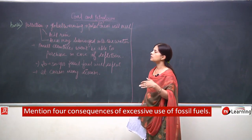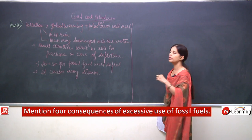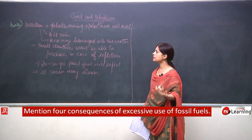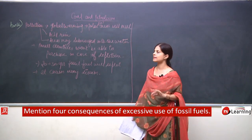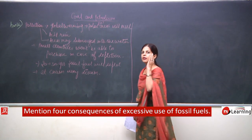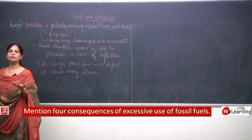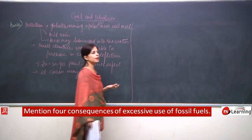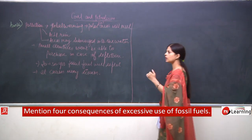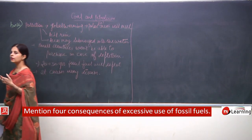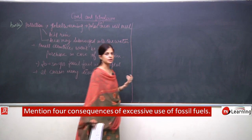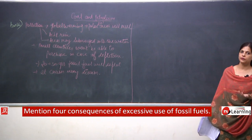Pollution will increase global warming, due to which the ice on the polar areas will melt and sea levels will increase, causing areas to get submerged. Pollution also causes acid rain. Smaller countries would not be able to purchase fuel from bigger countries because it will become very costly - stock will be limited, demand will be more, so the cost will go high. There is a need to shift to alternative sources of energy.